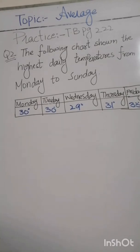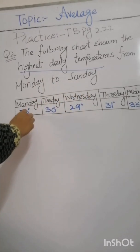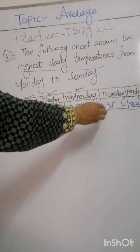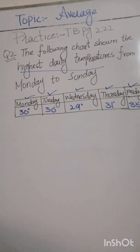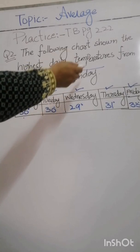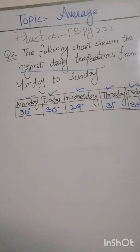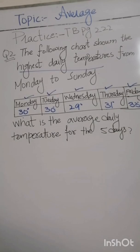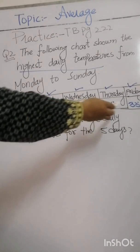Now we have question number two. The following chart shows the highest daily temperatures from Monday to Sunday. Monday we have 30, Tuesday we have 31, Wednesday we have 29, Thursday we have 31, and Friday we have 33. We have to find the average temperature. We have 5 days of temperature data and we need to find the average daily temperature.